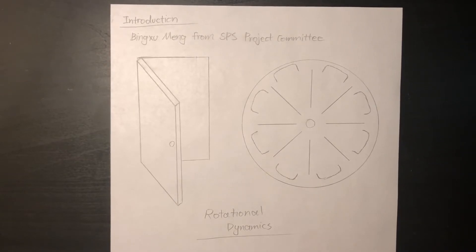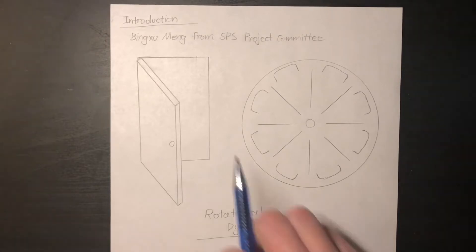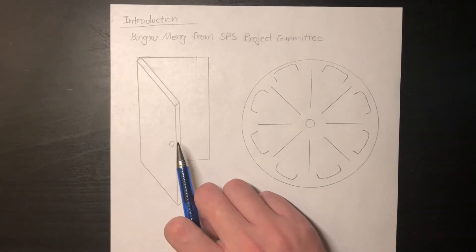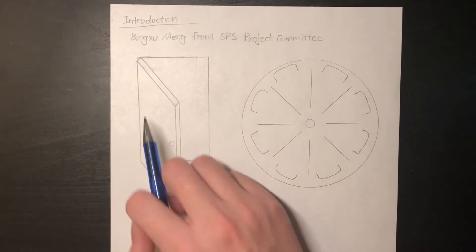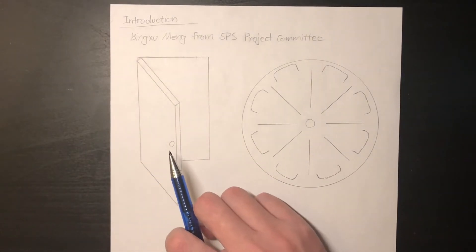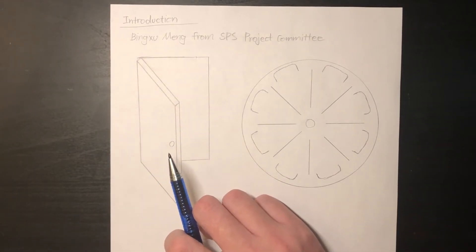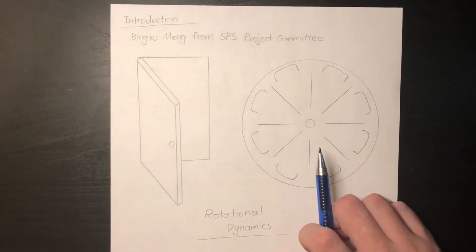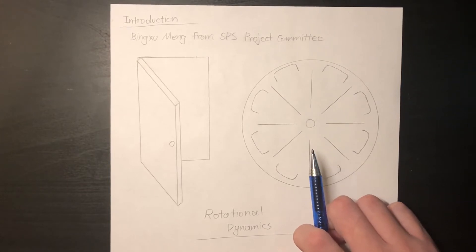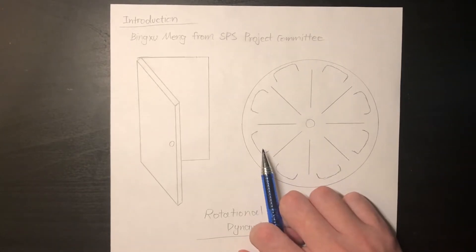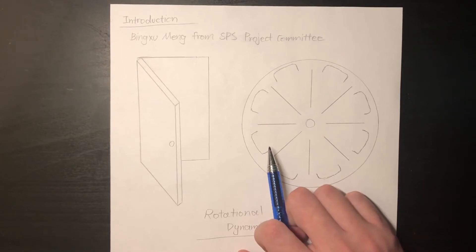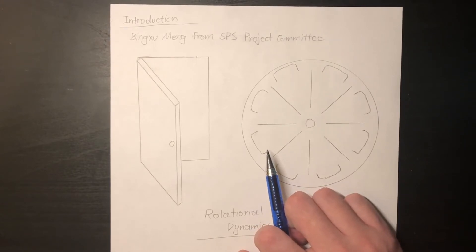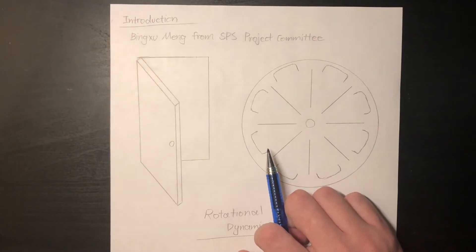What is rotational dynamics? One classic example would be the classroom door, where you would either pull or push the door to rotate around the axis. Another classic example would be a merry-go-round, where you stand on the side and need to pull harder to stay on it, or you will fall when it rotates super fast. Today we are here to explain the physics behind this phenomenon.